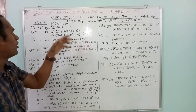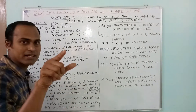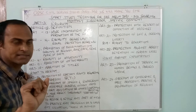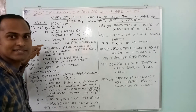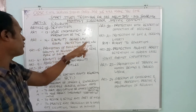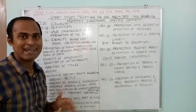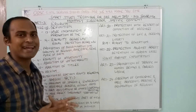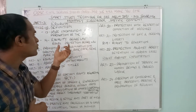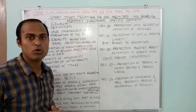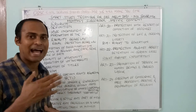Article 14 is very important — equality before law. Articles 14 to 18 cover the right to equality. Article 14 has two concepts: equality before law, which is a British concept by A.V. Dicey and a negative concept borrowed from Britain; and equal protection before law, which is an American concept and a positive concept, meaning the law will give protection to all.